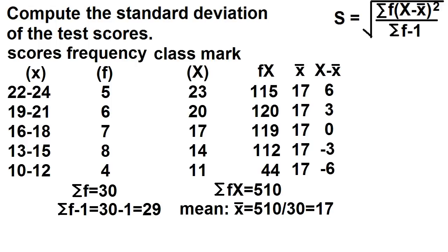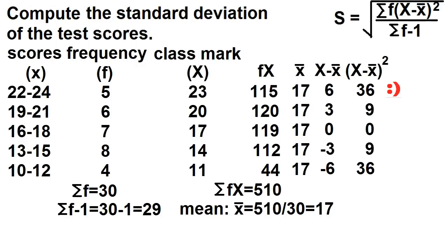Let's add another column for the square of the deviation. 6 times 6 is 36. 3 times 3 is 9. 0 times 0 is 0. Negative 3 times negative 3 is 9. Negative 6 times negative 6 is 36.